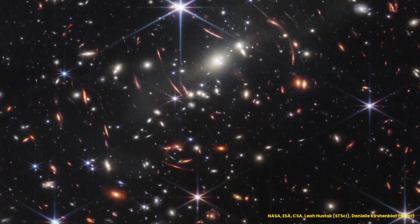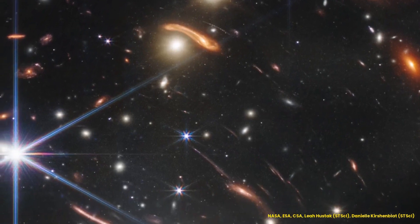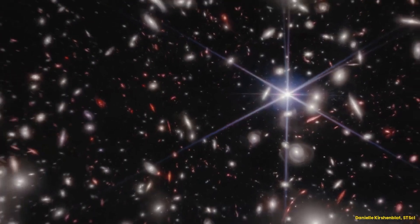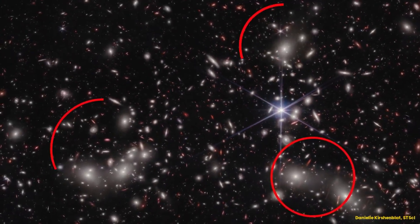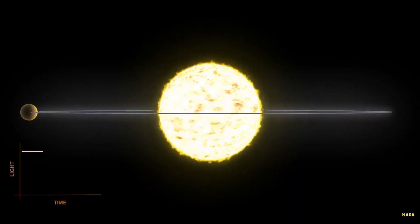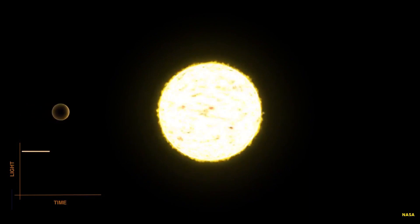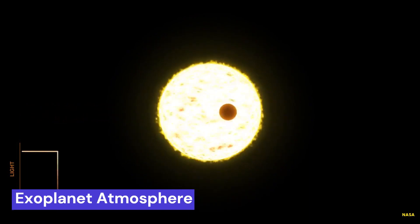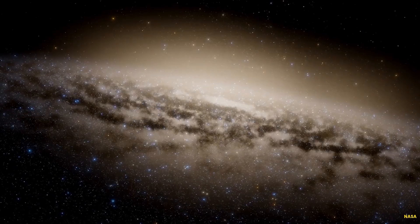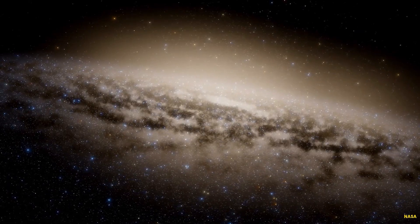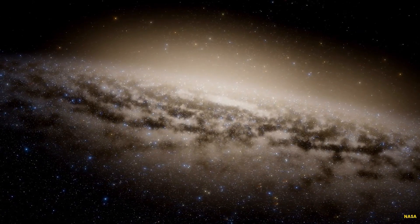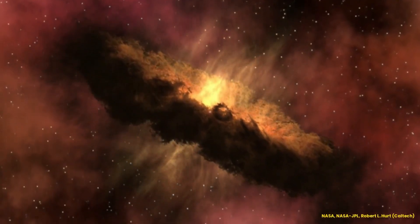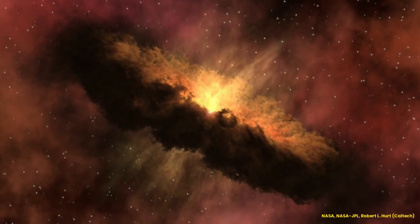Now let's explore some of the transformative science the instrument will enable with these unparalleled tools. It can directly see the first galaxies forming just after the Big Bang, over 13.5 billion years ago. Analyzing their composition will reveal how early galaxies evolved. JWST can also study exoplanet atmospheres for signs of habitability and even biosignatures. Within the Milky Way, it will capture stellar nurseries inside nebulae with stunning clarity.